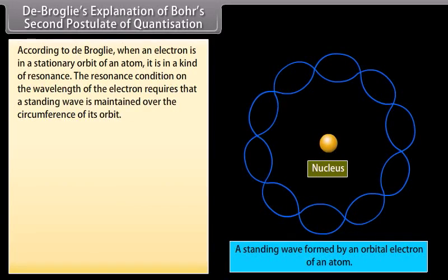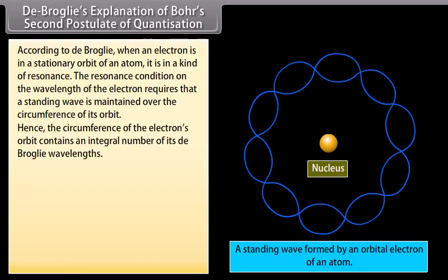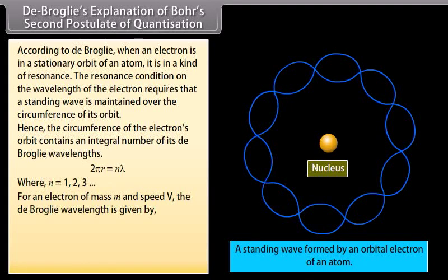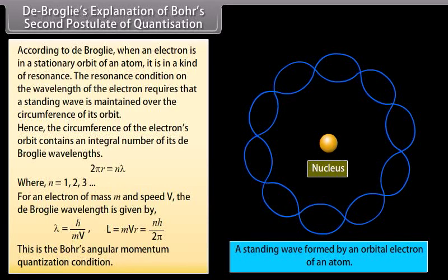De Broglie's explanation of Bohr's second postulate of quantization. De Broglie explained the quantization condition on angular momentum of an orbiting electron. According to de Broglie, when an electron is in a stationary orbit of an atom, it is in a kind of resonance. The resonance condition on the wavelength of the electron requires that a standing wave is maintained over the circumference of its orbit. Hence the circumference of the electron's orbit contains an integral number of its de Broglie wavelengths. 2πr = nλ, where n = 1, 2, 3, and so on. For an electron of mass m and speed v, the de Broglie wavelength is given by λ = h/(mv). This gives L = mvr = nh/(2π). This is the Bohr angular momentum quantization condition.